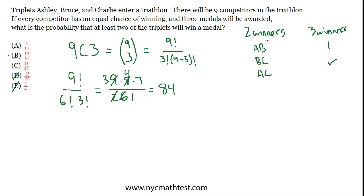But now let's deal with all the ways there could be two winners. It could be Ashley and Bruce, Bruce and Charlie, or Ashley and Charlie. So there's three pairings of two out of three. But what about the other person in the field? There's eight other participants.